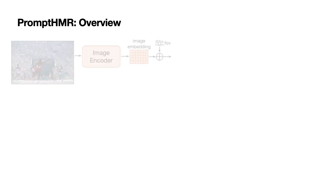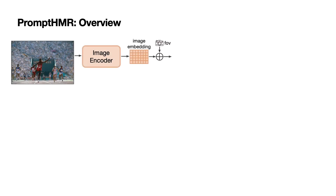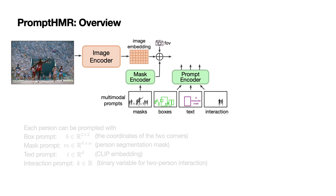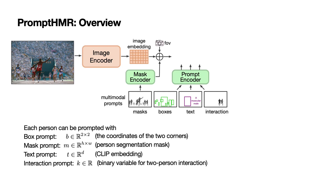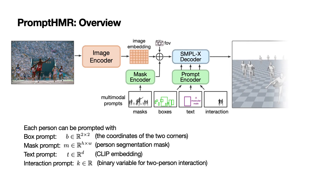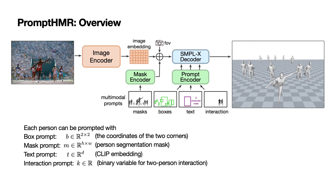PromptHMR consists of three components. The image encoder extracts image embeddings with a vision transformer. Camera intrinsics are encoded as per-pixel ray directions and added to the image embeddings. Next, the prompt encoder takes multimodal prompts and transforms them to tokens of the same dimension. Finally, the SMPL-X decoder applies cross-attention between the prompt tokens and the image embeddings, and decodes the output tokens to SMPL-X parameters. We do not include face and hand parameters in this study.